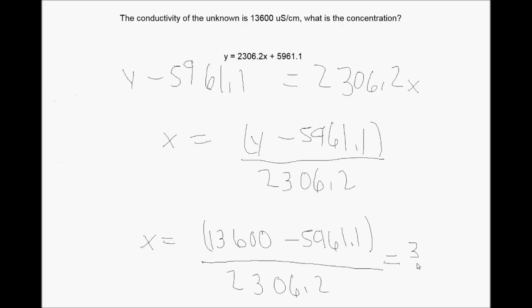We have now found the concentration of the unknown by multiple methods — both work, whether you do the math by hand or in Excel. What's really important to remember is what we've accomplished: we generated a calibration curve by measuring the conductivity of a series of known-concentration saltwater solutions, then used that calibration curve to determine the concentration of an unknown. Calibration curves allow scientists to find things that are difficult to measure, like salt concentration in an unknown solution, and relate them to things that are relatively easy to measure, like conductivity.